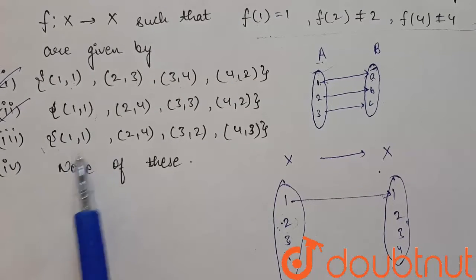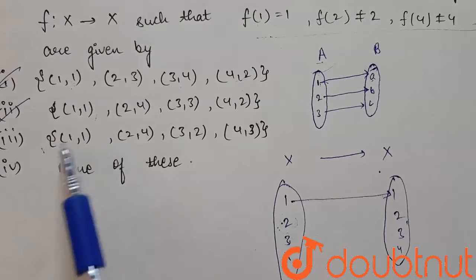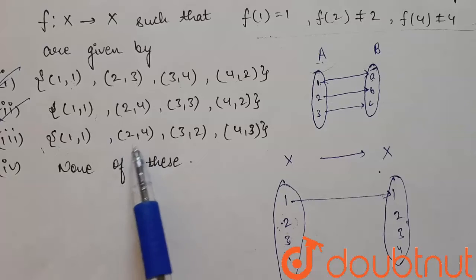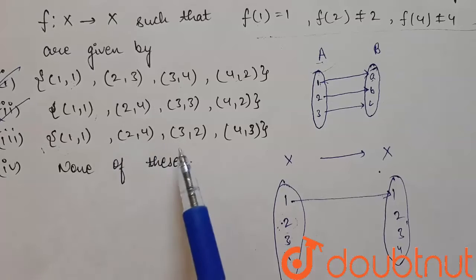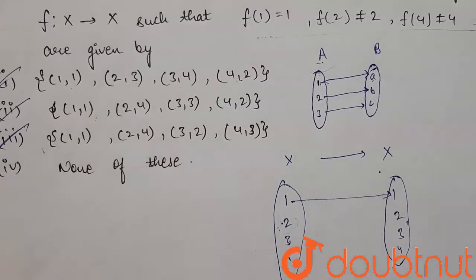Now let's check the third option. So 1 comma 1, this is the first condition is getting satisfied. 2 comma 4, this can be possible. 3 comma 2 and 4 comma 3. So this case is also possible.